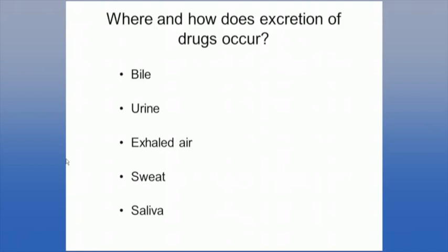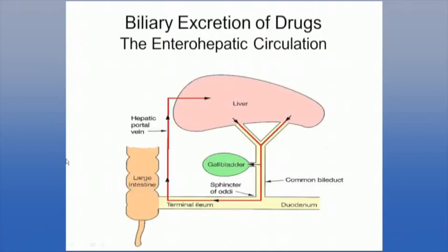This includes through the feces, which is through the bile — I'll explain this in more detail — through urine, which is probably the most common way drugs are excreted, and then for completeness, through exhaled air, in sweat, and in saliva. We're going to focus the beginning of this class on biliary excretion and urinary excretion.